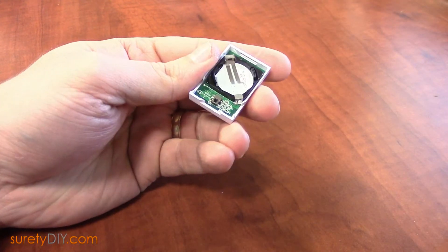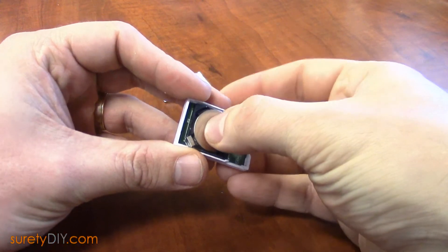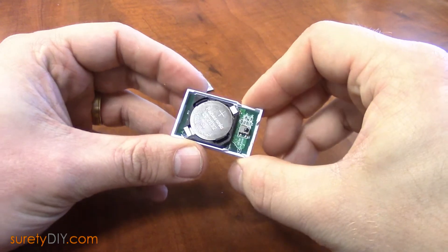Gently remove the existing battery from its tray and insert the new CR2032 battery into the tray positive side up.